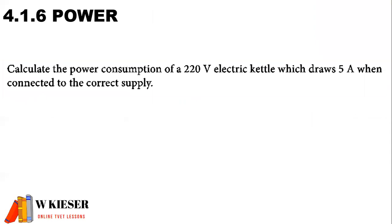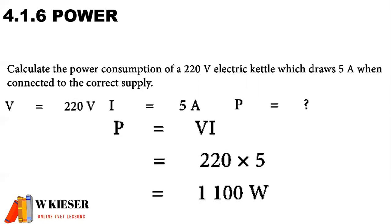In the example to calculate power: calculate the power consumption of a 220-volt electric kettle which draws 5 amps when connected to the correct supply. So we've got a voltage of 220 volts, a current flow of 5 amps, and power is the unknown factor. To calculate power, it will be the voltage multiplied by the current, and that gives us 1,100 watts.